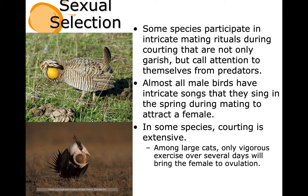Among large cats, only vigorous exercise over several days will bring the female to ovulation. Cheetahs — usually a brother pair — will chase a female and not allow her to slow down. She has to keep running until she ovulates, and then she will have intercourse with both brothers. That is the only way cheetahs can reproduce.